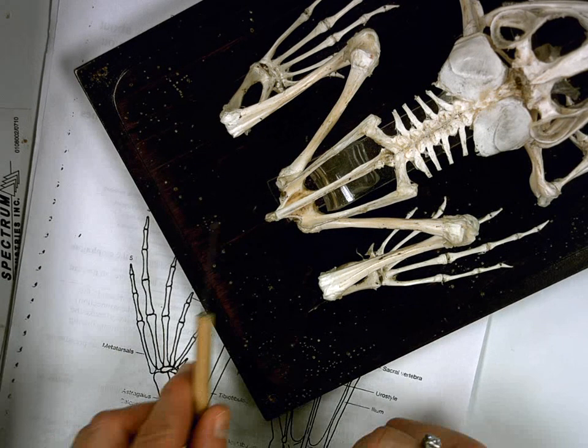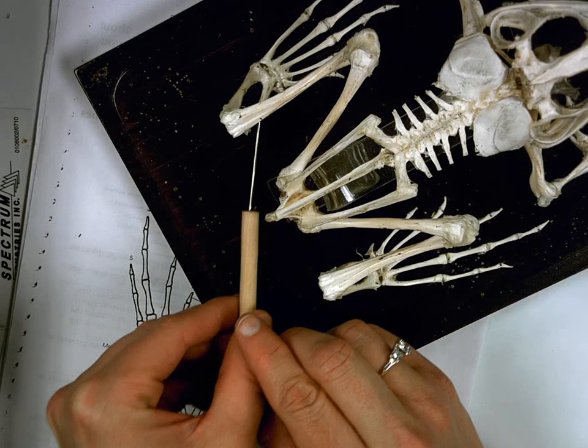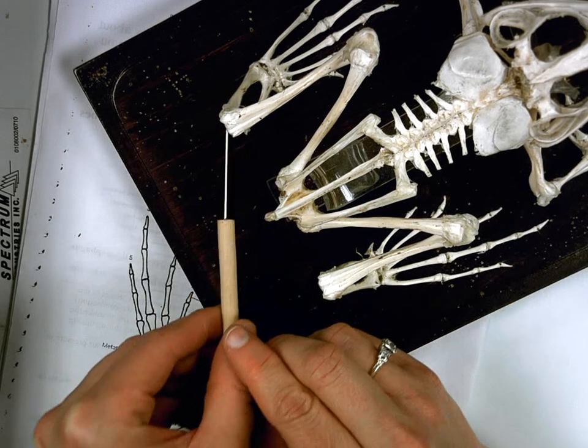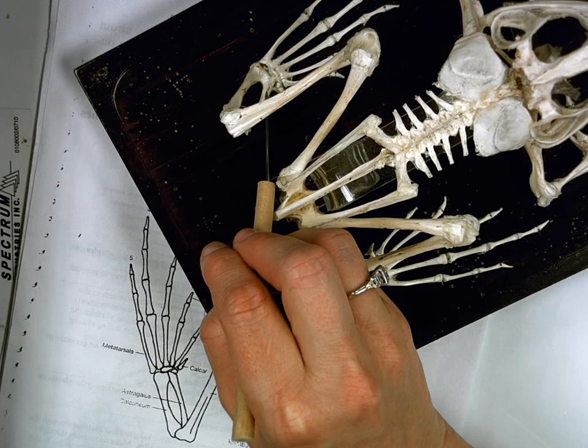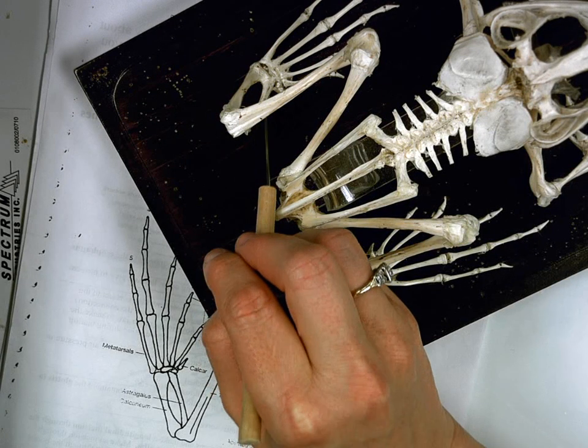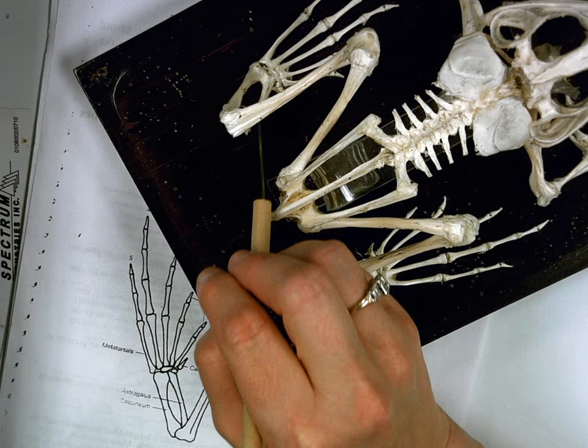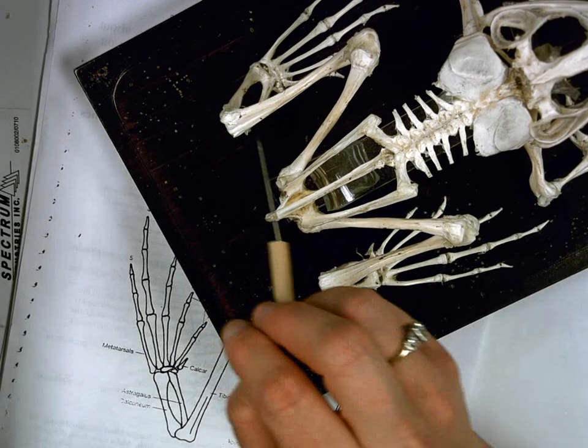Now this little bone that we see here, you can barely just see it sticking up on the front, which is this inside bone right here. If I'm touching it right there with the probe, that is the astragalus bone. Astragalus is the inside bone.